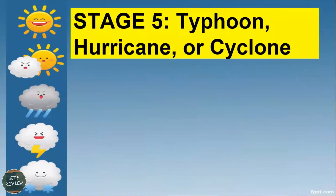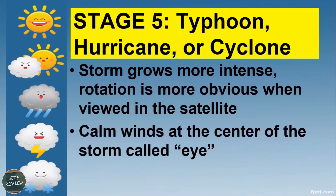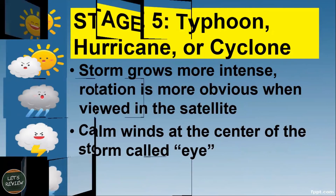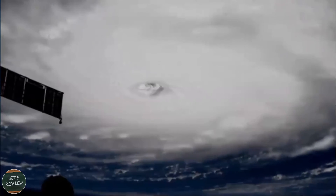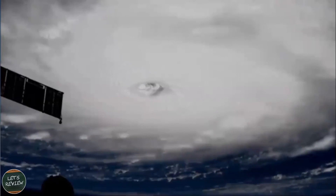Stage five is called a typhoon, hurricane, or cyclone. The storm grows more intense and rotation is more obvious when viewed in satellite. There is calm wind at the center of the storm — that center is called the eye, which looks like a hole in the middle of the clouds.